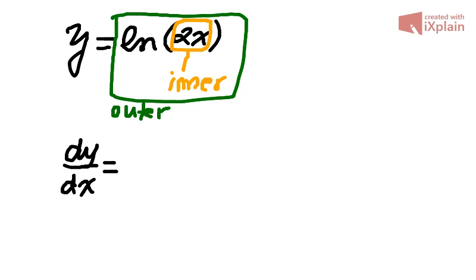The derivative of the green outer function, ln of something, is 1 over that something. So we copy that expression that was inside the brackets.